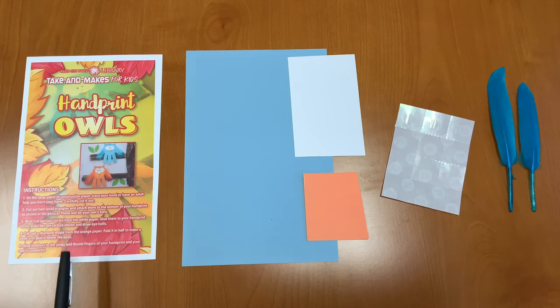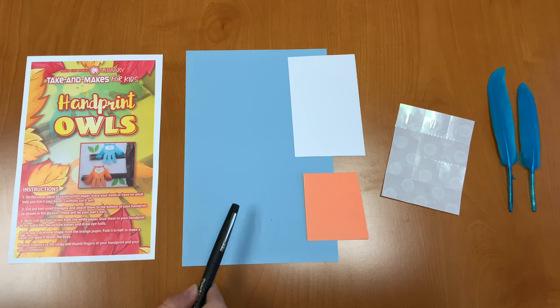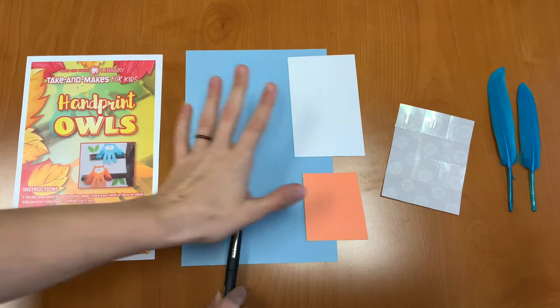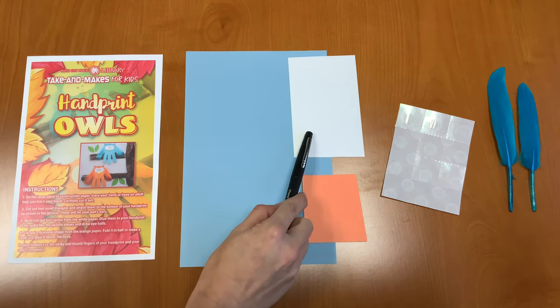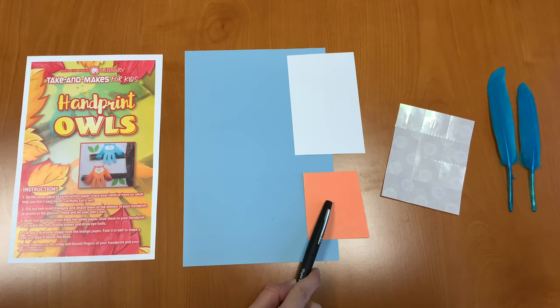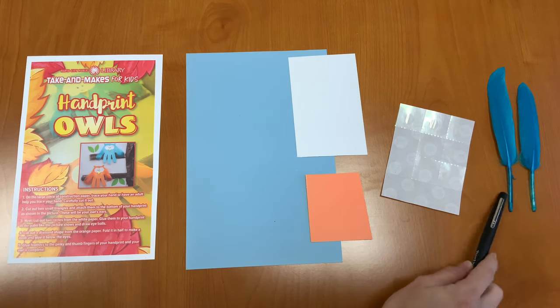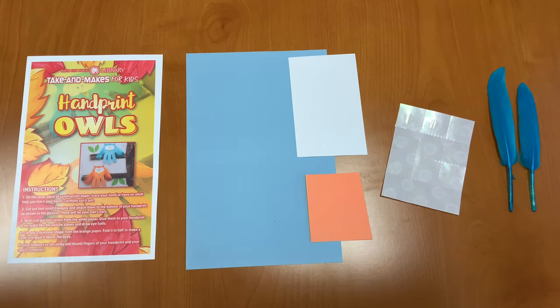In your Take and Make kit you should have an instruction sheet, a piece of construction paper large enough for your hand, a piece of white paper, some orange construction paper, glue dots, and two feathers. Let's get started.